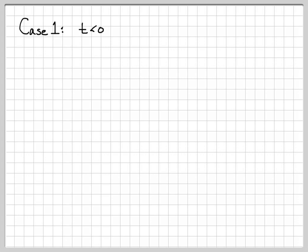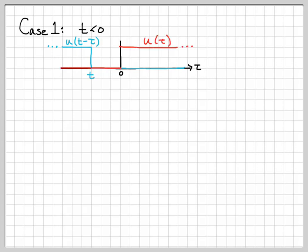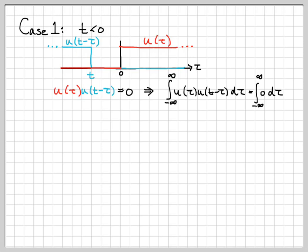Now we can perform the integral. Consider the two cases: t less than 0 and t greater than or equal to 0. For t less than 0, u of t minus tau turns off before tau equals 0, so when I sketch it in blue alongside u of tau, they have no non-zero overlap — at every point tau, one of them is 0. Their product is therefore 0 everywhere, so integrating gives 0. This is a very easy case.